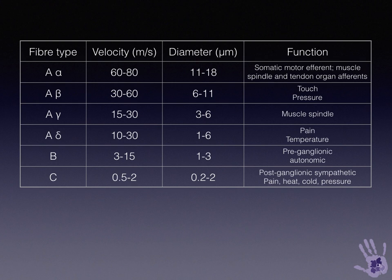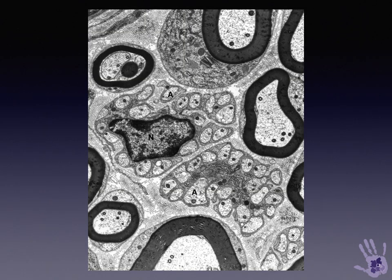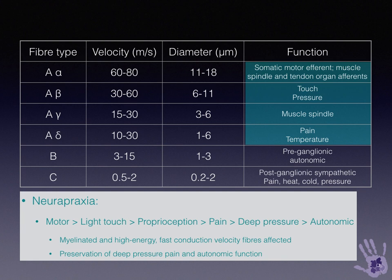Losing the Schwann sheath can disrupt conduction along segments. The smaller fibres aren't reliant on Schwann cells for conduction, although they are intimately related. Large fibres are more likely to be involved in a neuropraxia injury — when there's ischemia, edema, or segmental demyelination. It's rare to have any involvement of deep pressure, piloerector, autonomic pseudomotor, or vasomotor function, and patients will often have some deep pressure awareness and preserved autonomic nervous function.